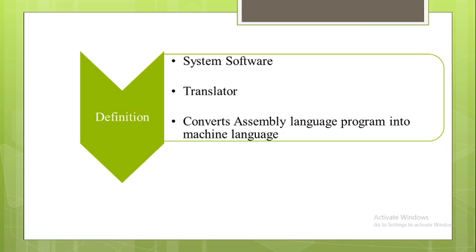Therefore the system software called assembler is used to convert assembly language into machine level language. Assembler is a system software which acts as a translator and it converts assembly language program into the machine language. As assembly language is a machine dependent language, assemblers are also machine specific.